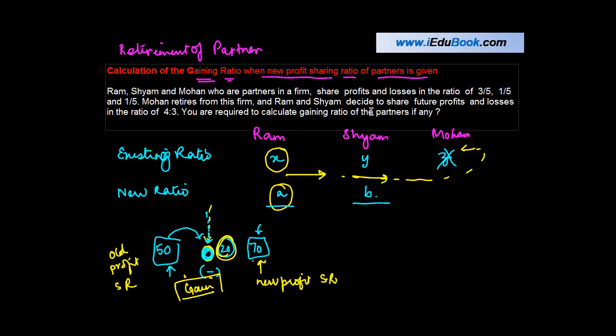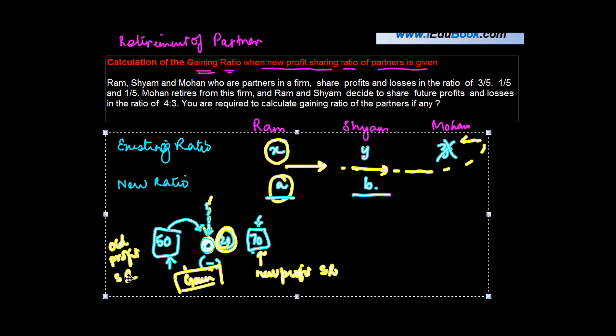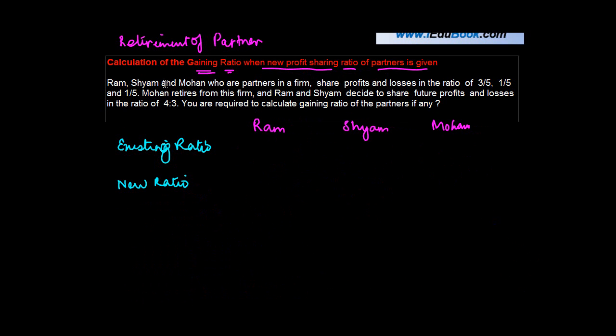Let's look at this question now. Ram, Sham, and Mohan, who are partners in a firm, share profits and losses in the ratio of 3/5, 1/5, and 1/5.